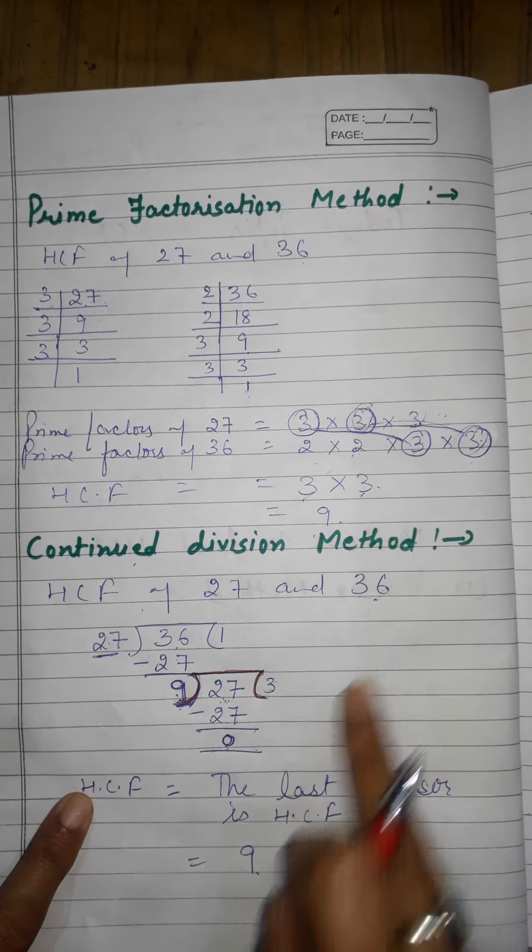All three methods gave us the same answer: 9. These are the three methods of finding the HCF.